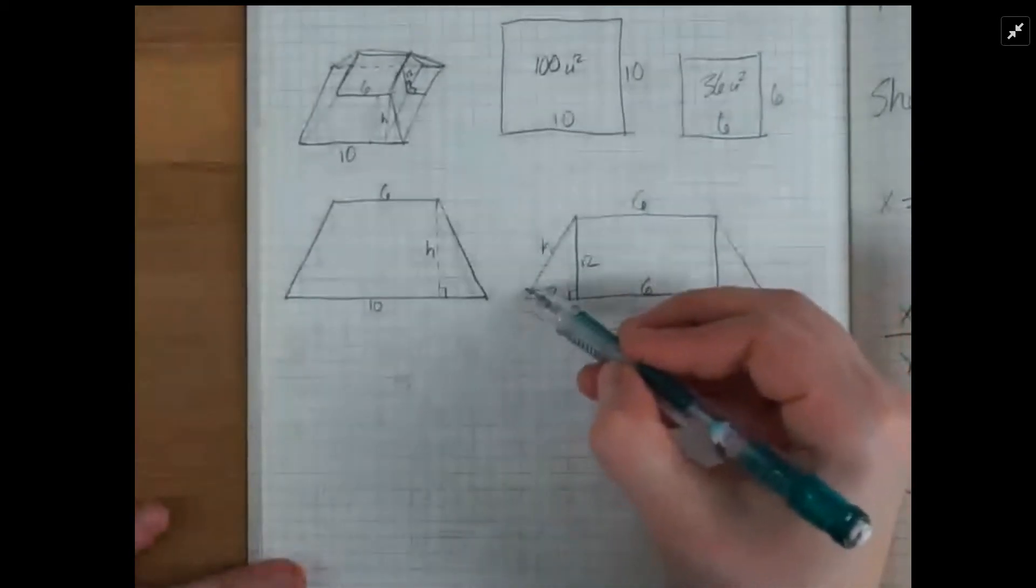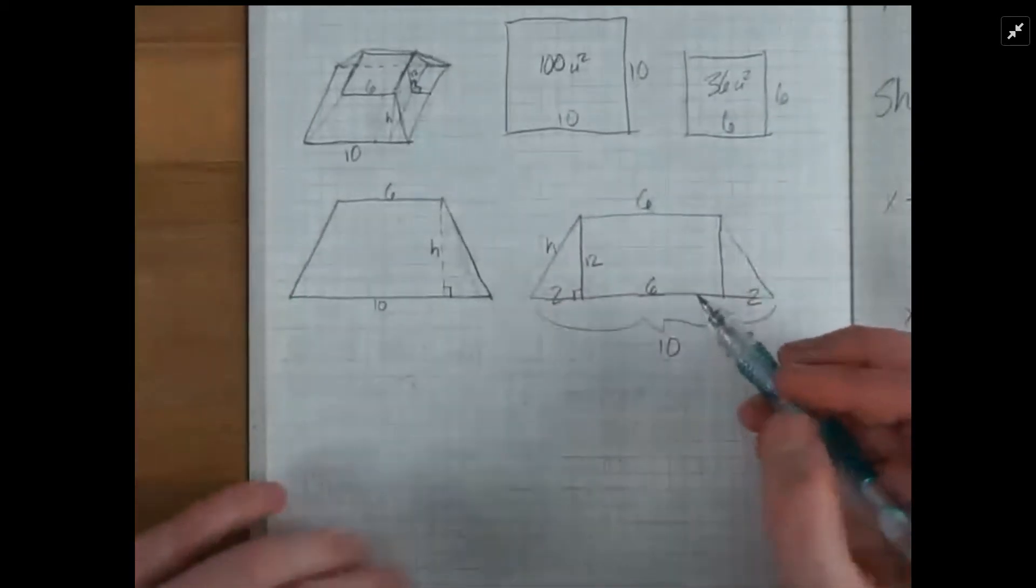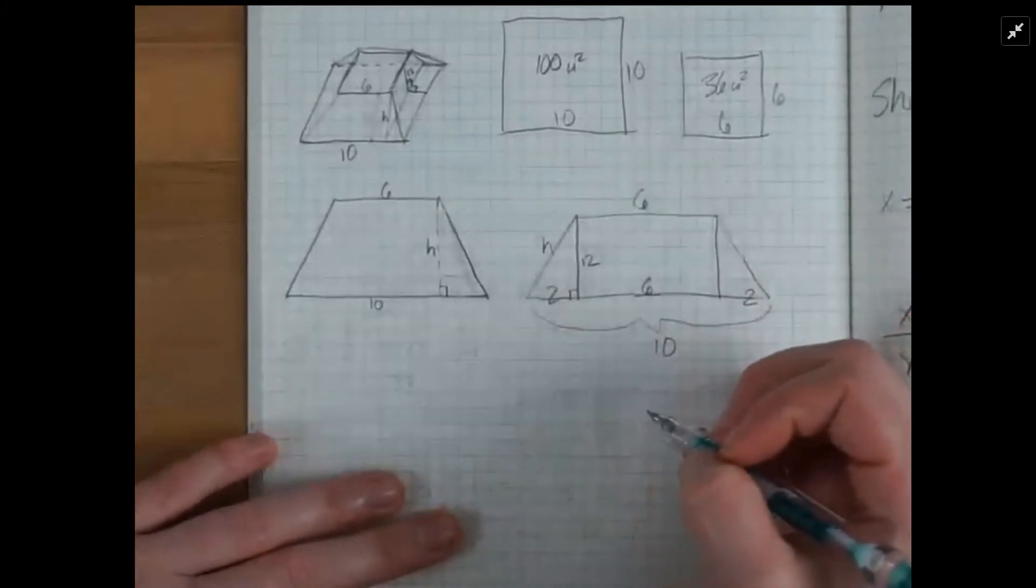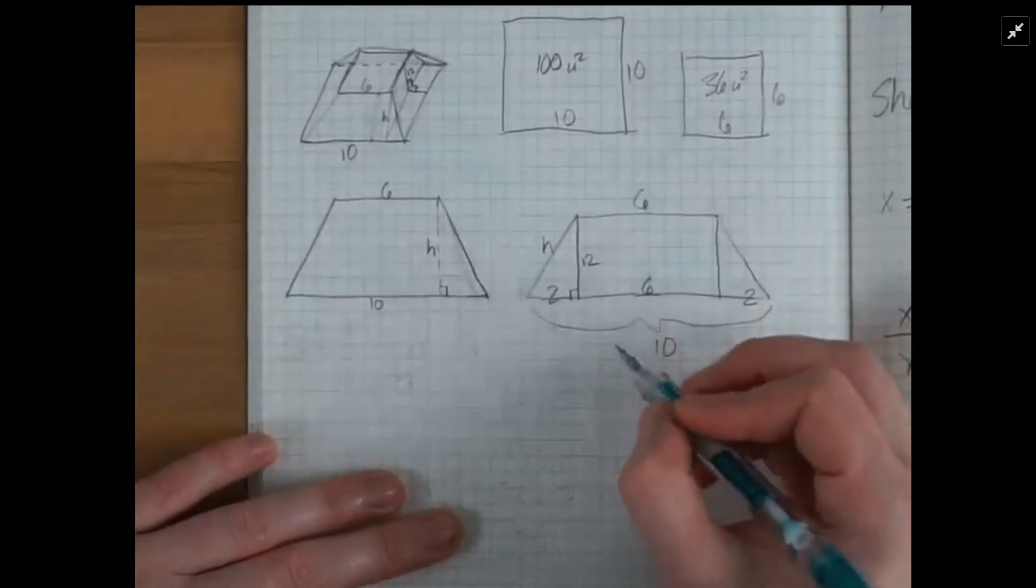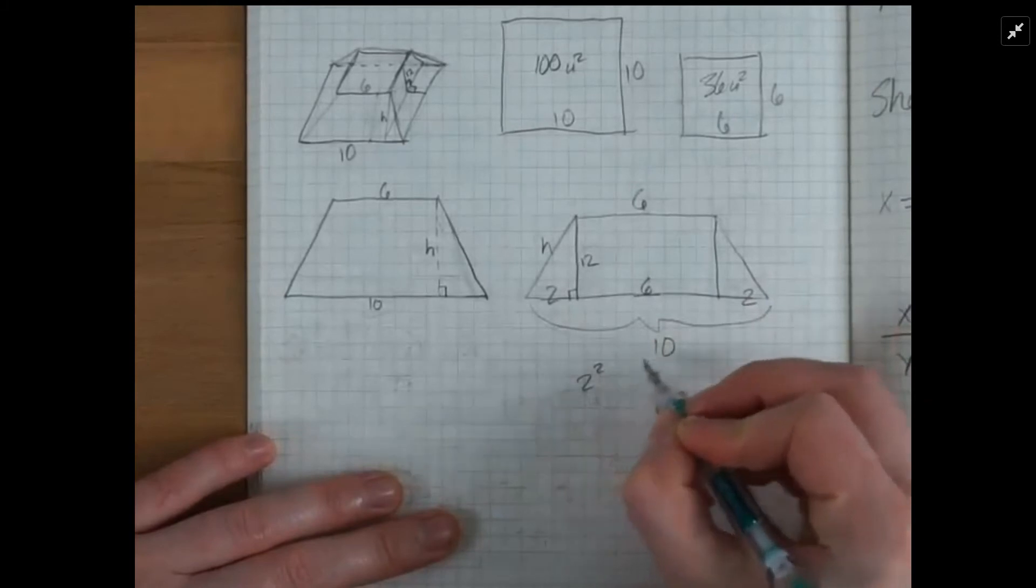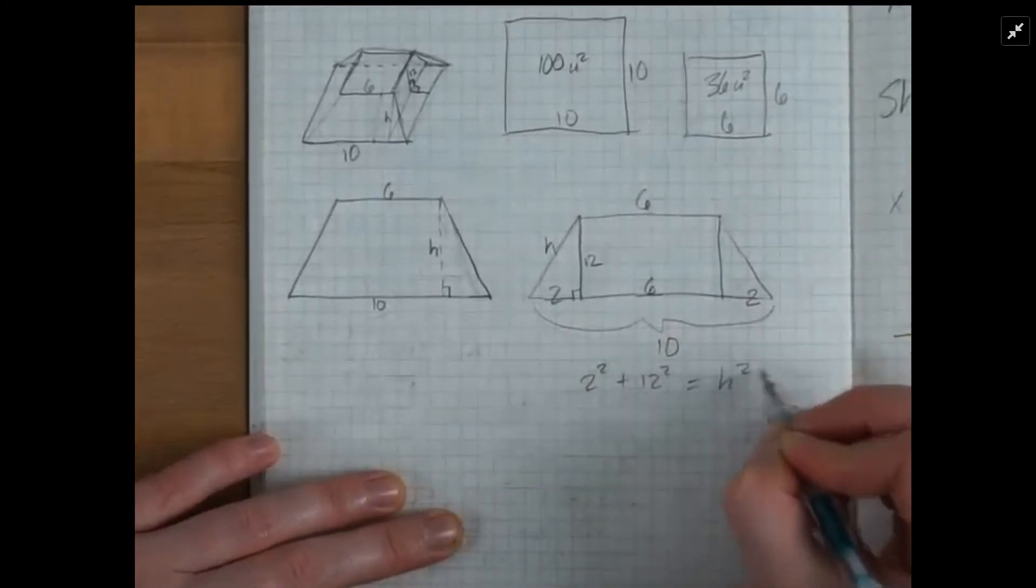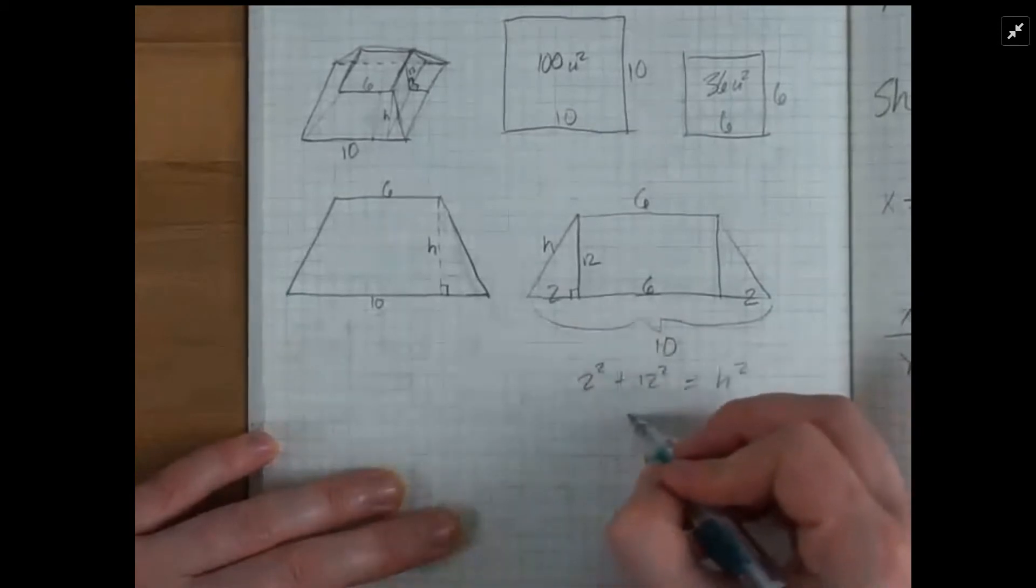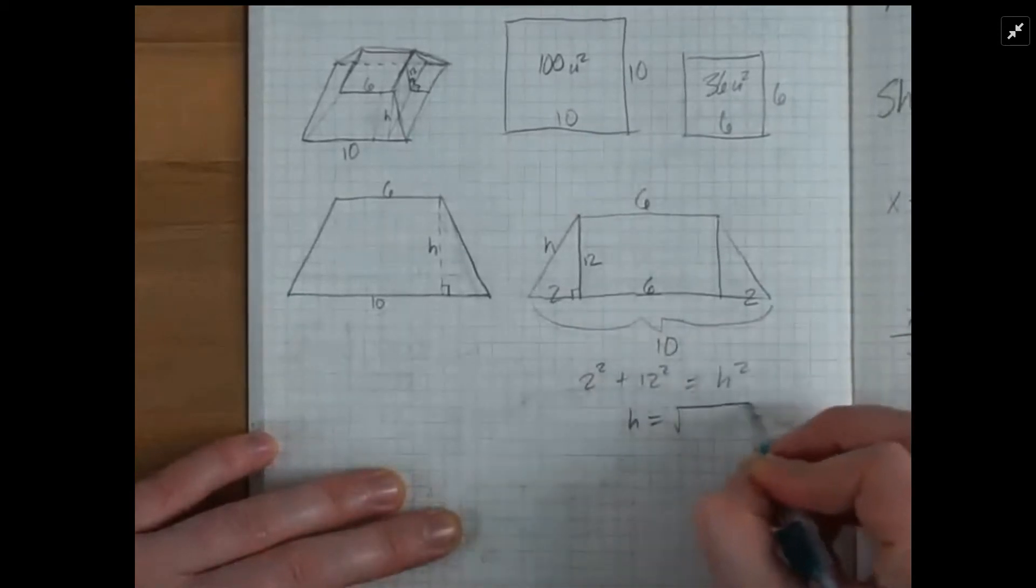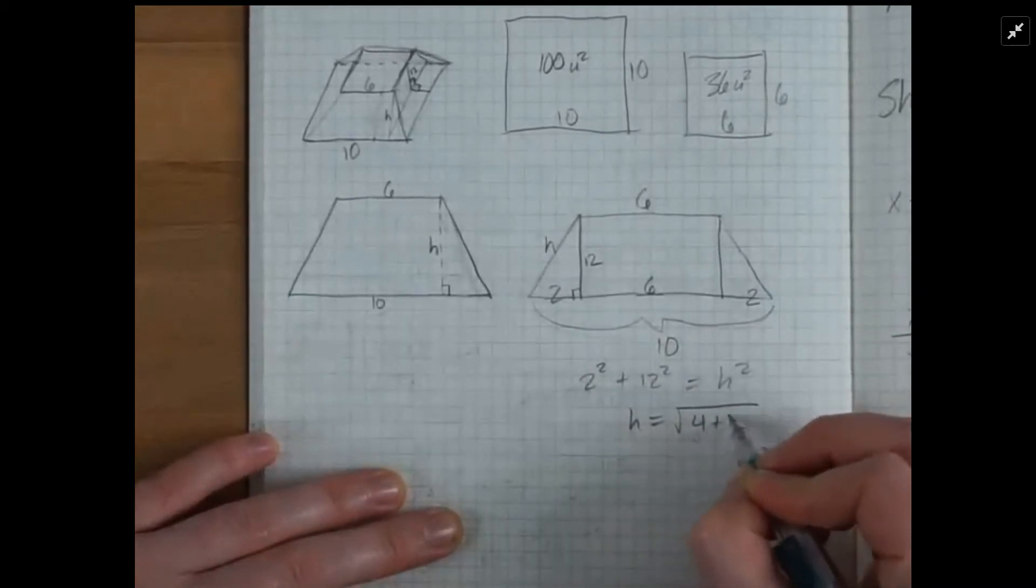So to calculate this H, we're going to use the Pythagorean theorem of a squared plus b squared equals c squared, and say that 2 squared plus 12 squared equals h squared. Therefore, h equals the square root of 4 plus 144.